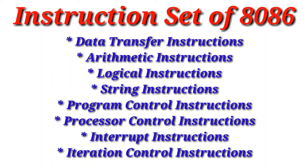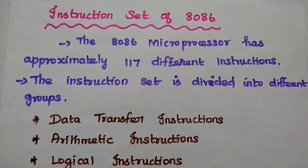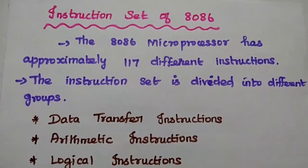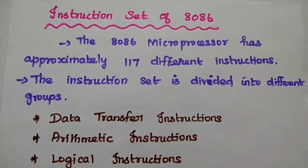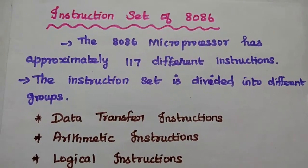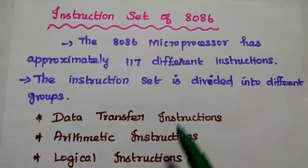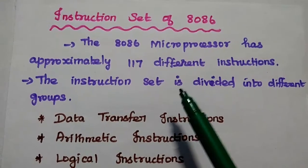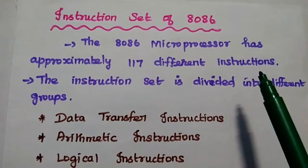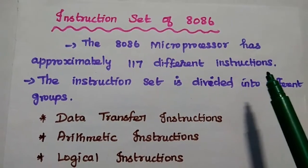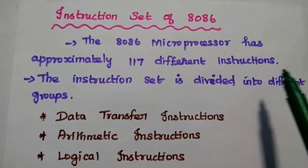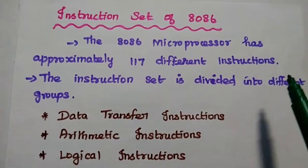Dear students, now we are going to discuss the instruction set of the 8086 microprocessor and its types. The 8086 microprocessor has approximately 117 different instructions for its assembly language program.